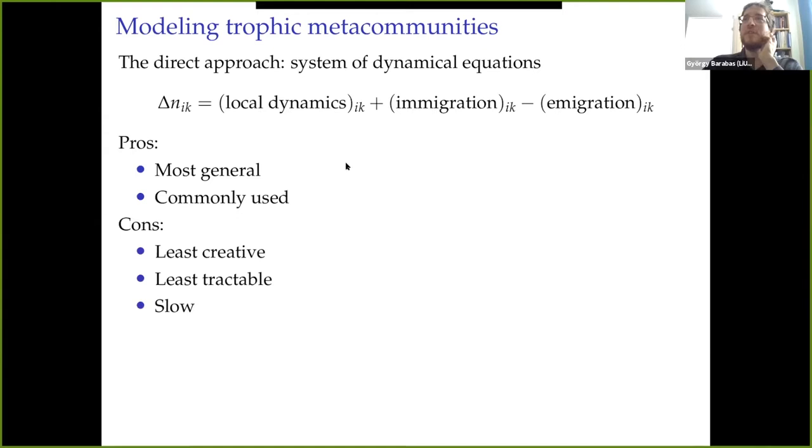So those are the pros of dealing with it. What are the cons? The first is that it's commonly used for a reason, namely that this is the simplest kind of system one would think of writing. So it's not necessarily the most creative way of going by modeling metacommunities. Note that that is not necessarily a disadvantage. That can actually be an advantage because if we have good, well-established, solid ways of going about doing something, then we shouldn't be creative about that.